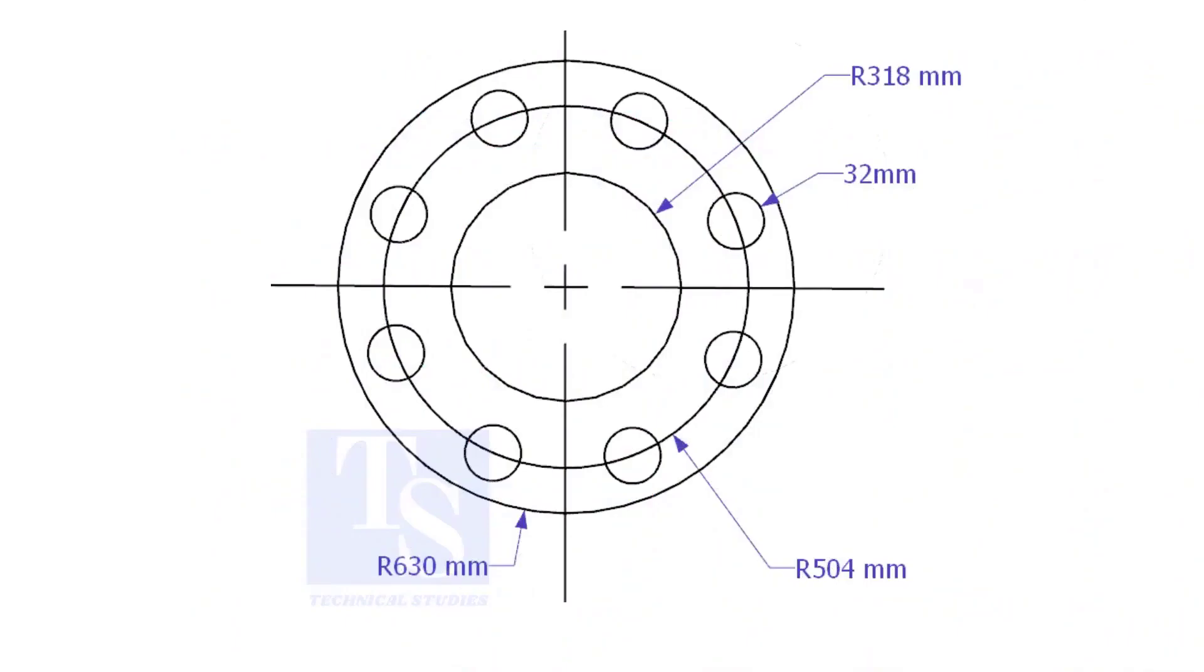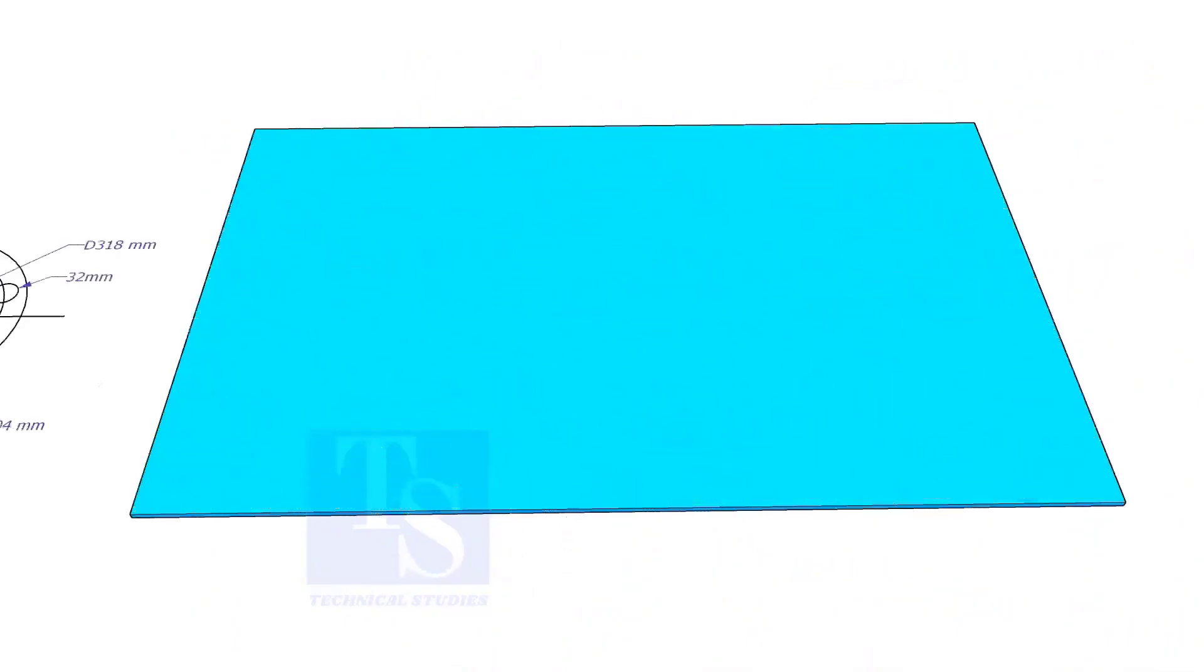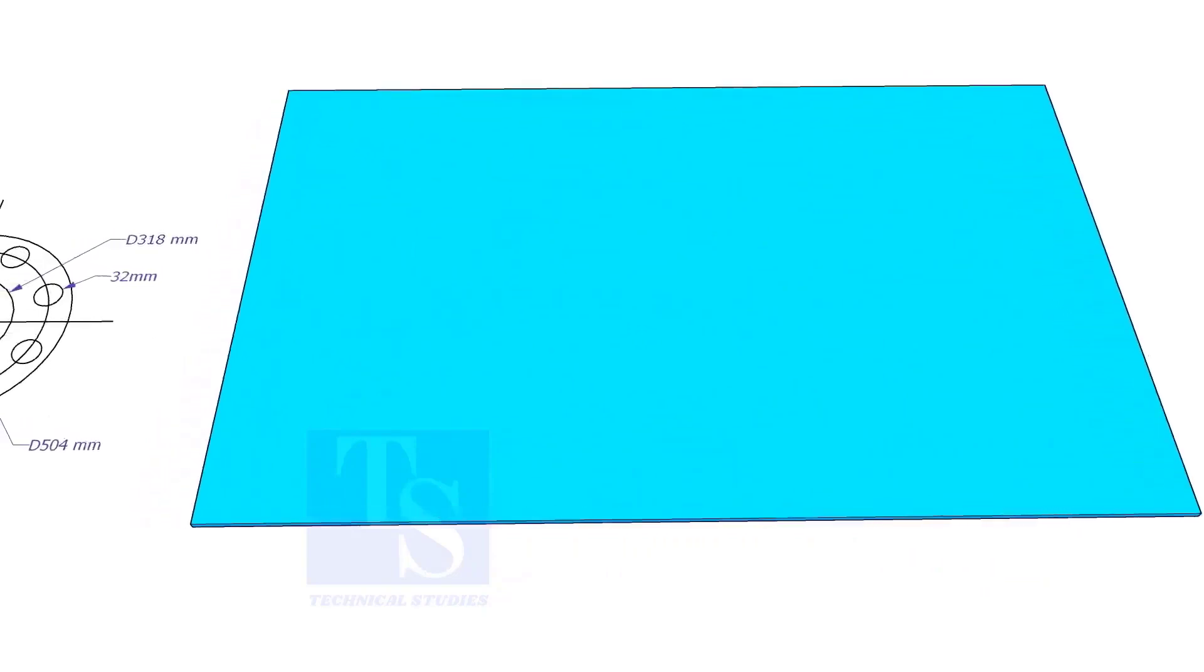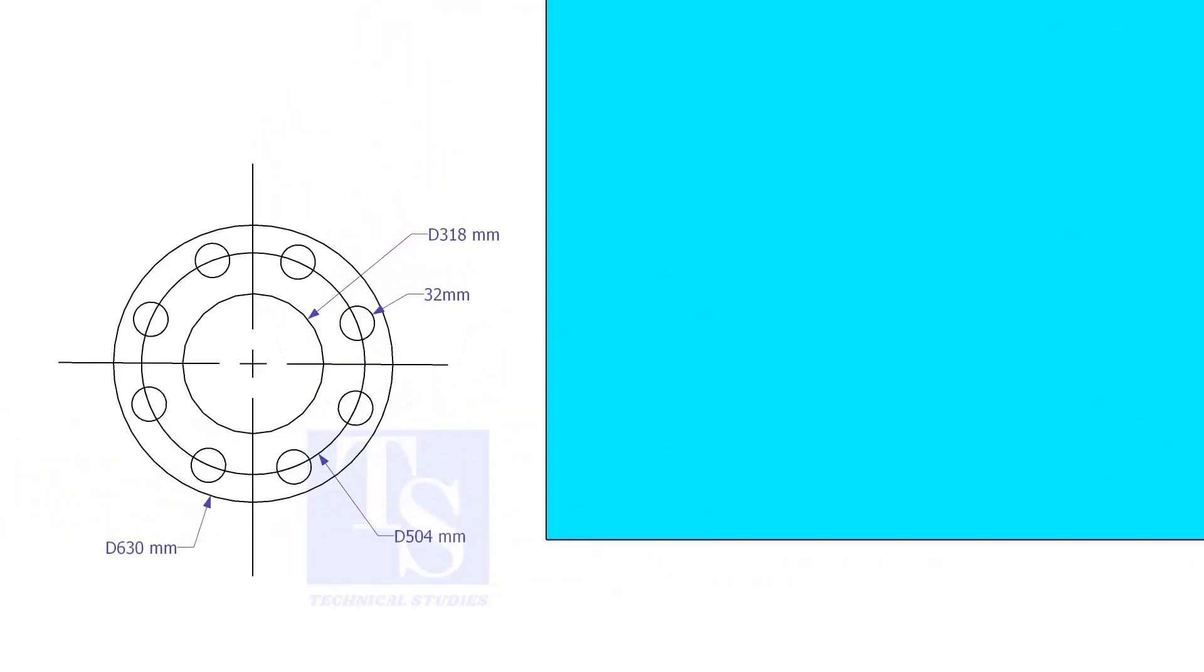Let us mark this flange. Draw a line 10 millimeters more than the half OD of the flange from the edge of the plate.